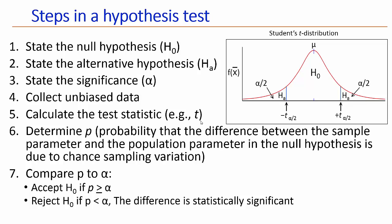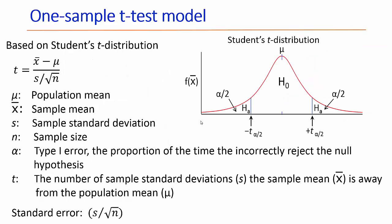If p is smaller than alpha, then you reject the null hypothesis and you would say the difference between your observation and your null hypothesis is due to something in addition to chance sampling variation, and that difference would then be statistically significant. In today's demonstration, I'm going to show you how to use Excel to do a one sample t-test. Before we do that, we're going to talk about the model.